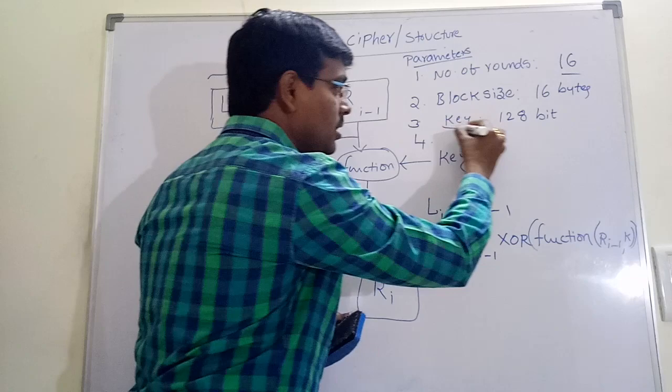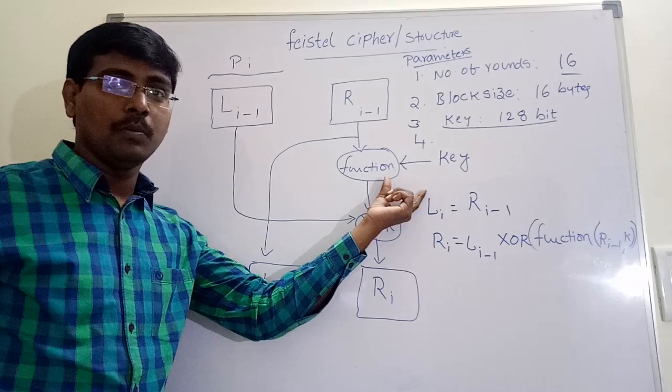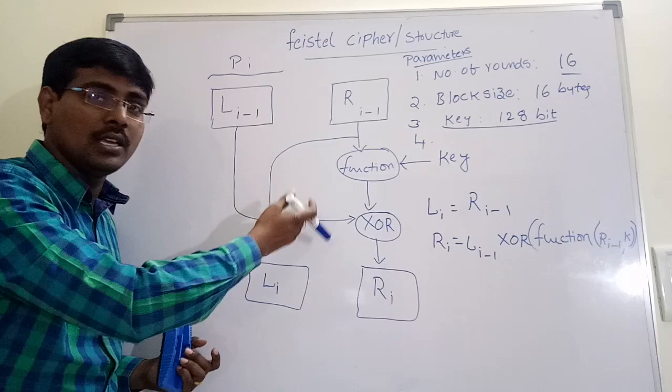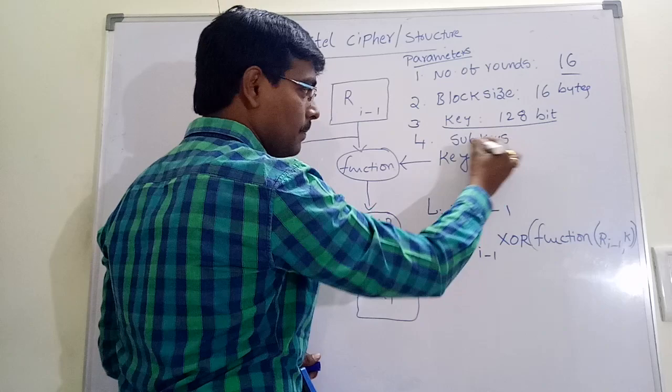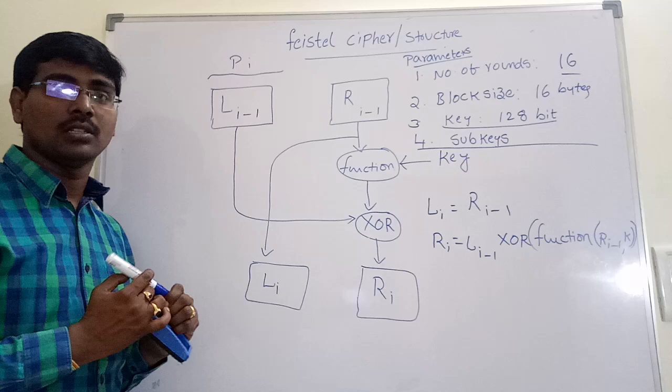And for each and every round, this is the original key we are using to perform operation. But for each and every round, the key has to be changed. For example, 128 bit key. For round 1, we are applying only 4 keys. Round 2, we are applying some, round 3, we are applying some other keys. How we are applying the keys? We will discuss in DES, cast 128, bluefish in next class. So if key is 128 bits, for each round, we have to generate sub-keys. For each round, we have to generate sub-keys. The complexity of the algorithm must be greater to generate sub-keys. That is, it is not possible for the attacker to identify the sub-keys.